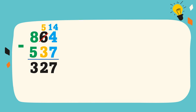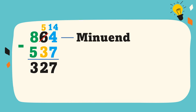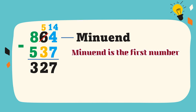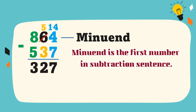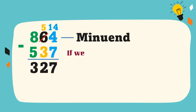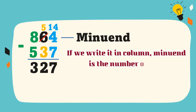In this example, 864 is the minuend. Minuend is the first number in a subtraction sentence. If we write it in column, the minuend is the number on top.